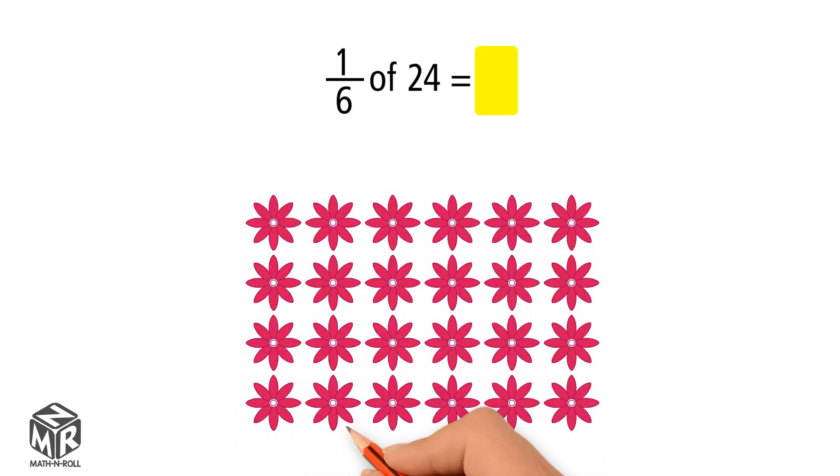Circle the equal groups and count the number of flowers in one group. There are four flowers in one group, so one-sixth of 24 equals 4.